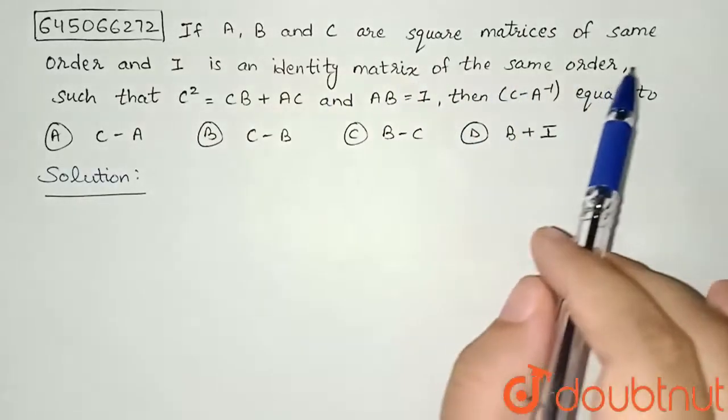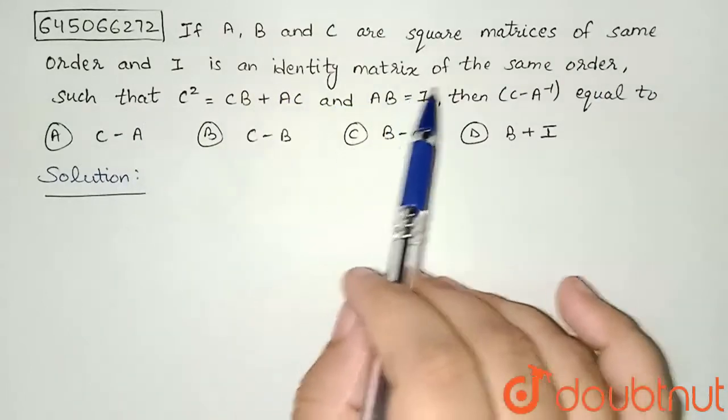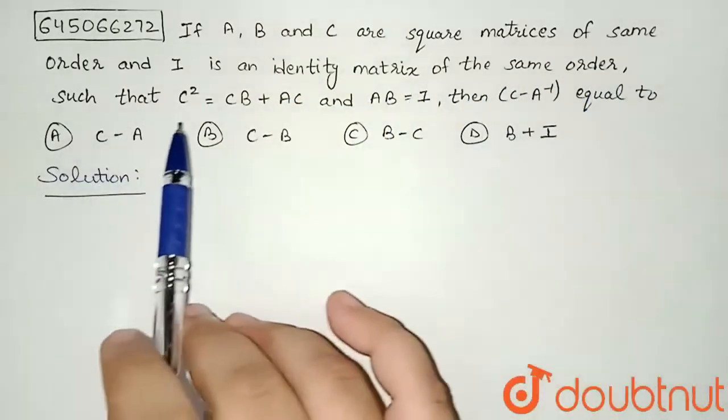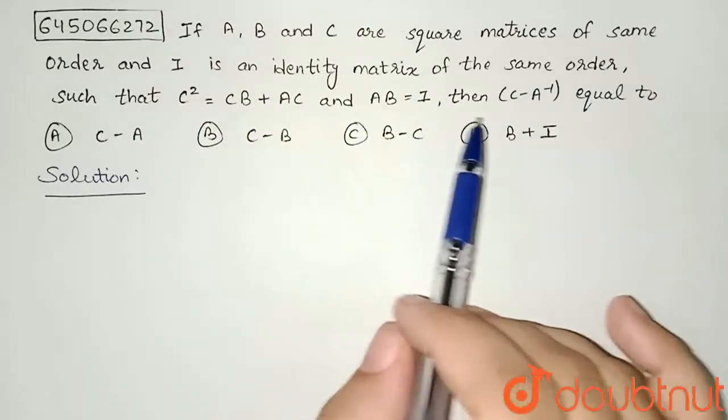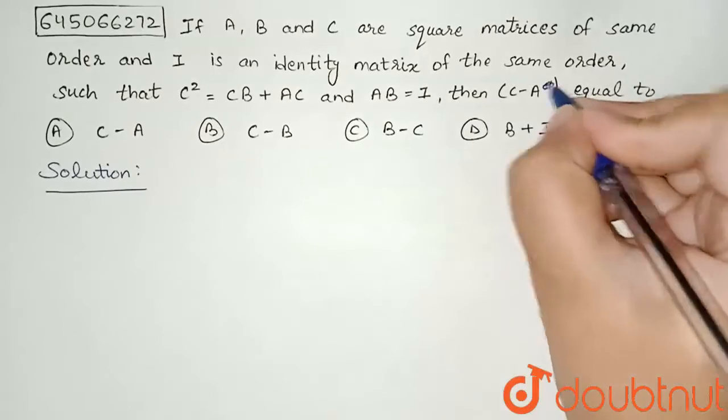A, B, and C are square matrices of same order, and I is an identity matrix of the same order such that C² = CB + AC and AB = I, then (C - A)⁻¹ equals?